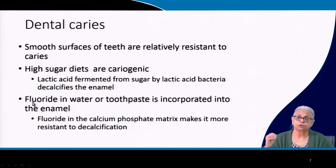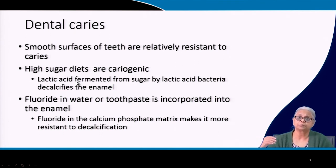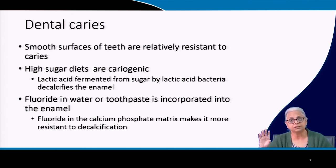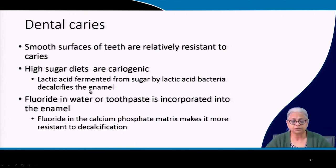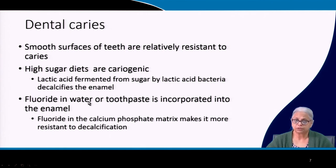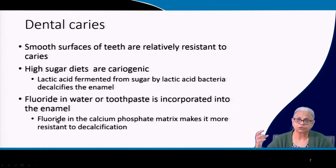Tooth enamel is generally made of carbonated calcium phosphate, which is easily decalcified by acids — not just lactic acid, but also the intermediate acids produced during microbial metabolism, making the mouth slightly acidic. If you take fluoride — either in toothpaste or in water — it gets incorporated into the enamel matrix of calcium phosphate, making it resistant to decalcification.